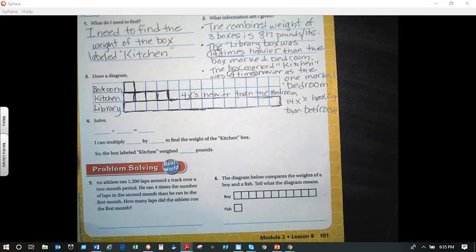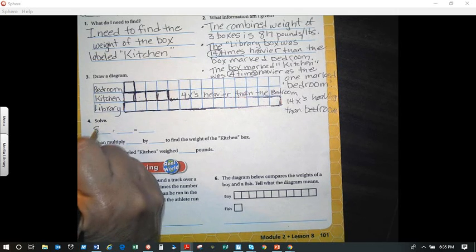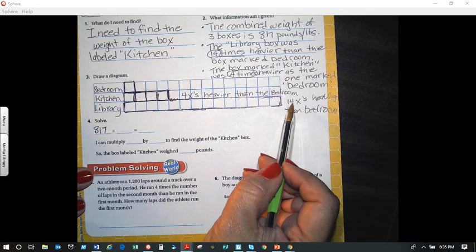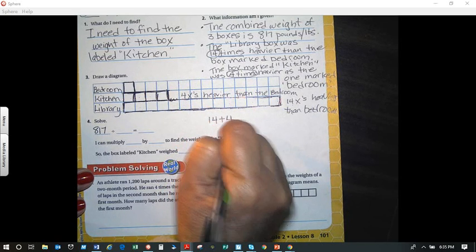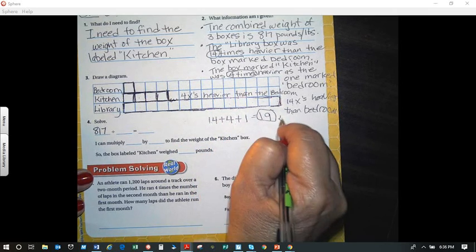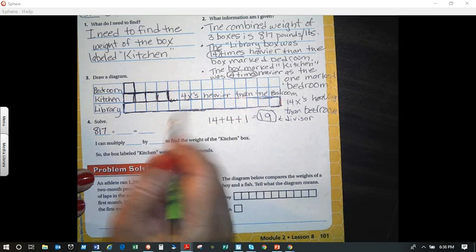So we drew out our diagram. And now, what would my equation be? I know my dividend, right? What's my dividend? Yeah, it's going to be the total weight that I have. And so what is the total weight that I have? It's 817. What's going to be my divisor? You're right, I have to add these up. So what is 14 plus 4? So I'm going to write it out here: 14 plus 4 plus 1. So this is 18 plus 1 equals 19. So this makes it my divisor.